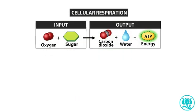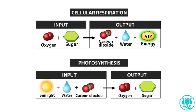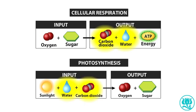Cellular respiration is a bit like photosynthesis in reverse. In photosynthesis, oxygen and sugar are products of the reaction, while they are inputs in cellular respiration. In cellular respiration, carbon dioxide and water are products of the reaction, while in photosynthesis, they are inputs. In photosynthesis, the sun provides the energy to power the reactions, while in cellular respiration, the released energy is stored in the bonds of ATP.